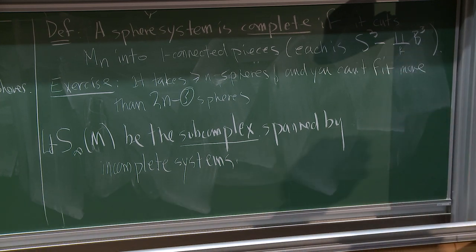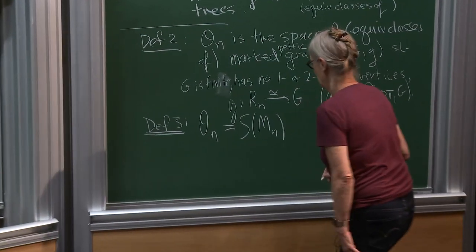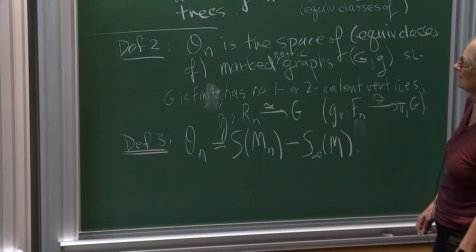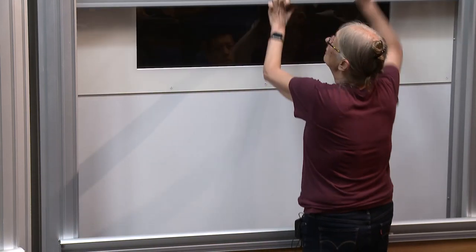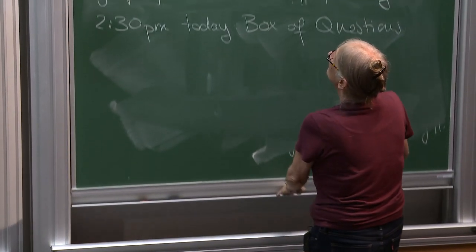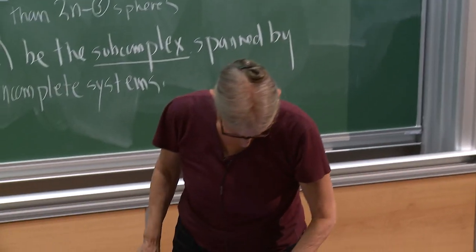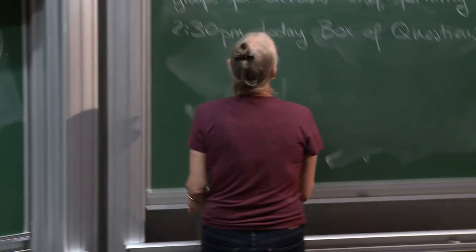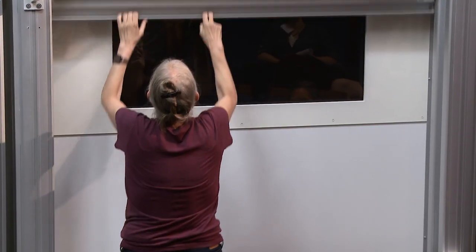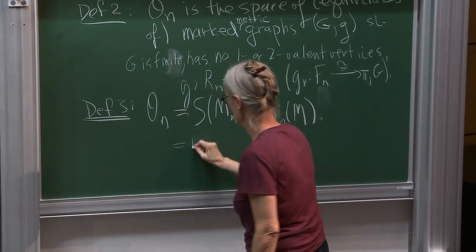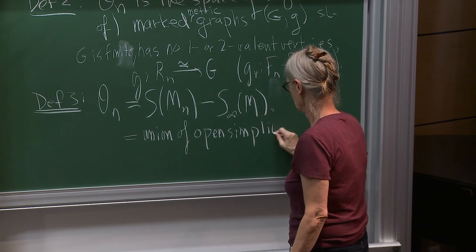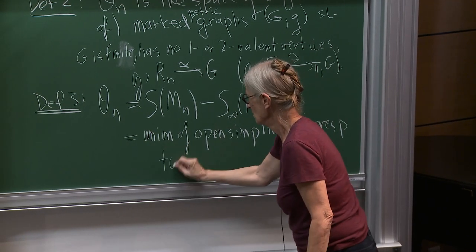Then, definition three: On equals the sphere complex of M minus S-infinity of M. In other words, it's the union of open simplices corresponding to complete systems. That's the third definition.